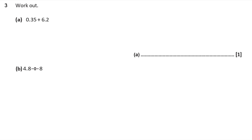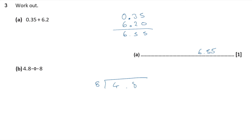Question 3. Work out 0.35 plus 6.2. When adding decimals, line them up along the decimal point. I'll put an extra zero at the end to give 6.20, so it lines up with 0.35. Adding up the columns gives 6.55. Then 4.8 divided by eight: eights into 4 don't go, eights into 48 go six times, so the answer is 0.6.